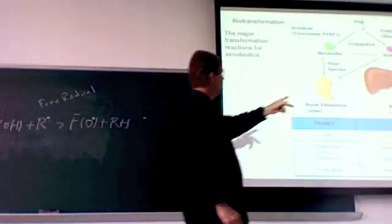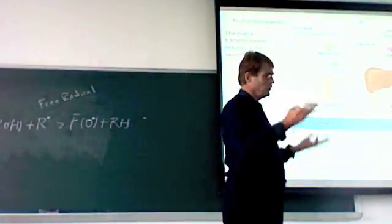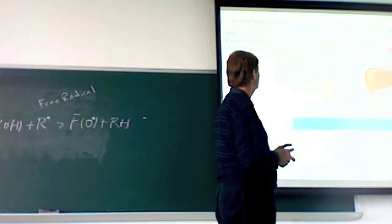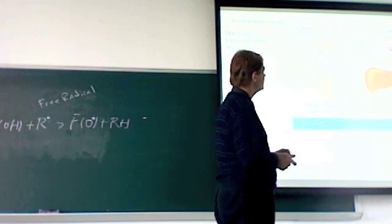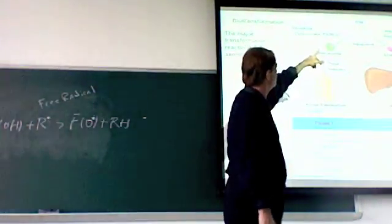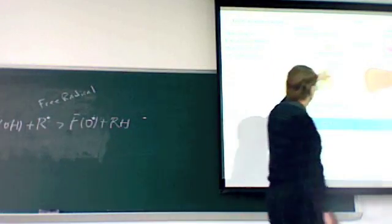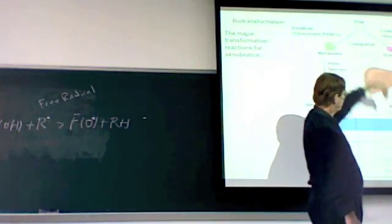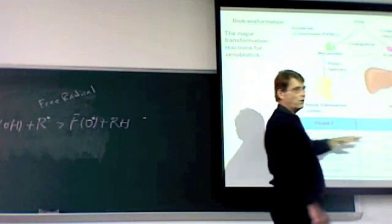So this divides these two reactions, phase one and phase two. It shows you their individual reactions and how they're connected. Once again, this is for a drug, but also refers to a toxin. So toxins can go through phase one reactions, or phase two reactions, or both.